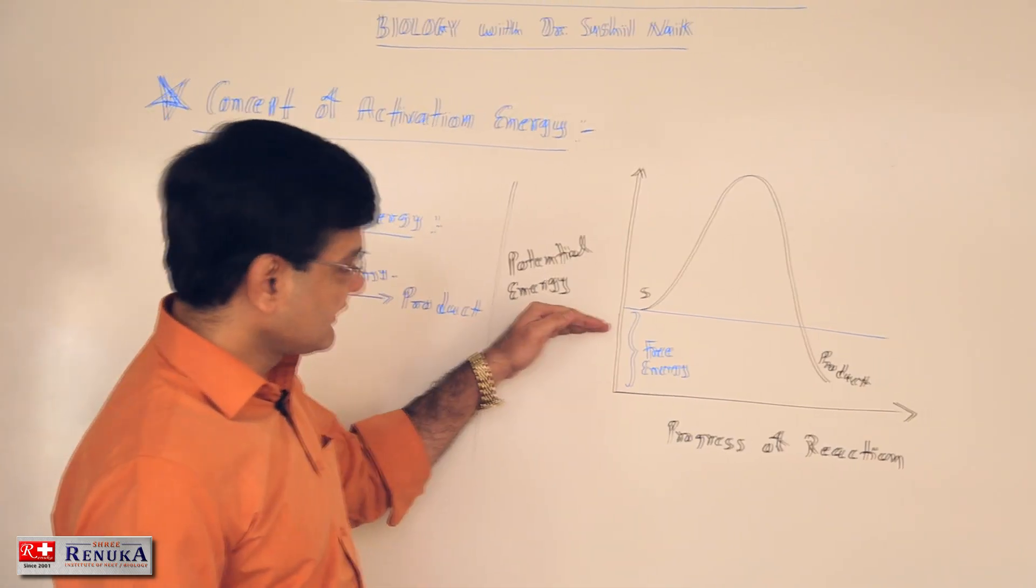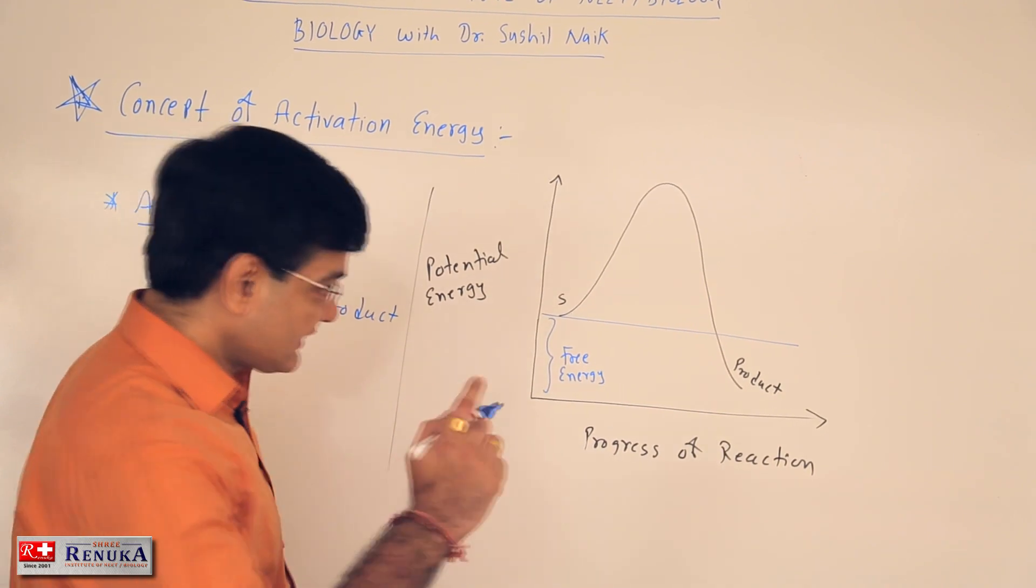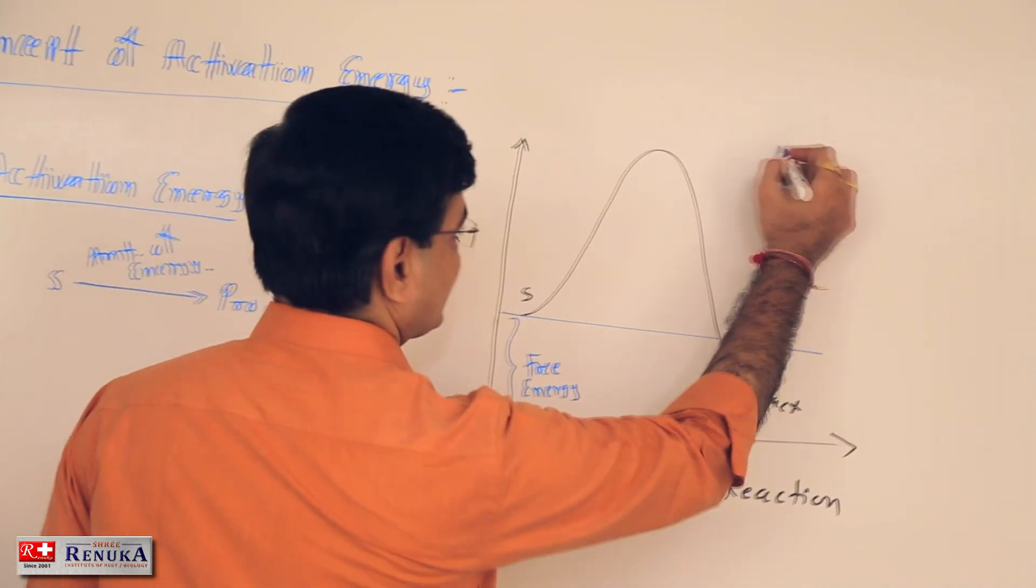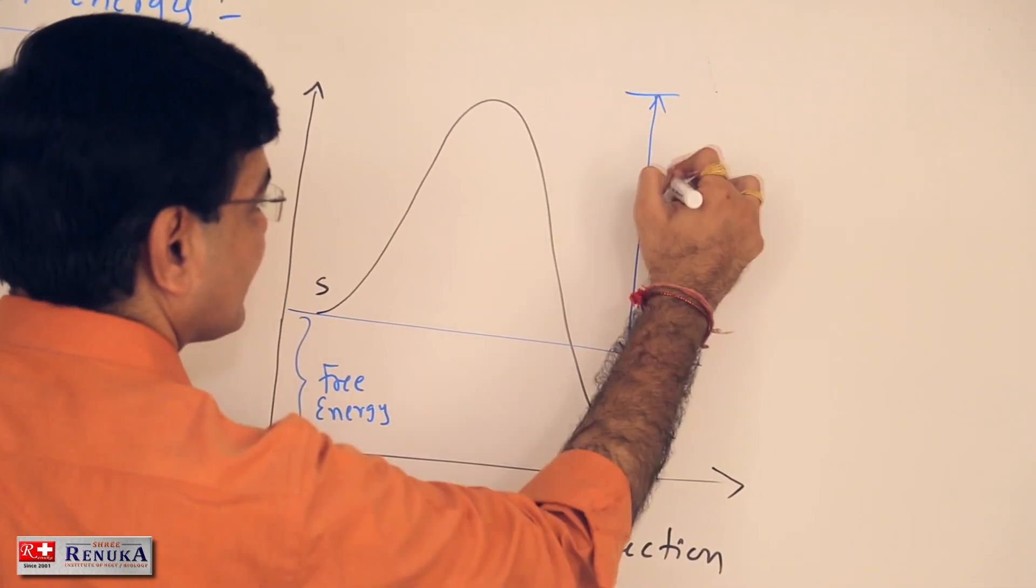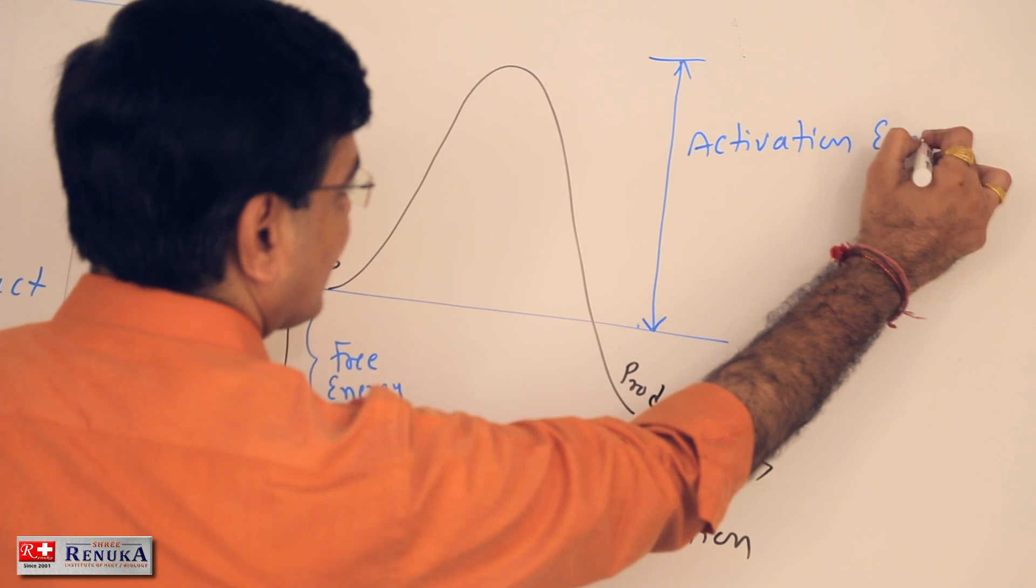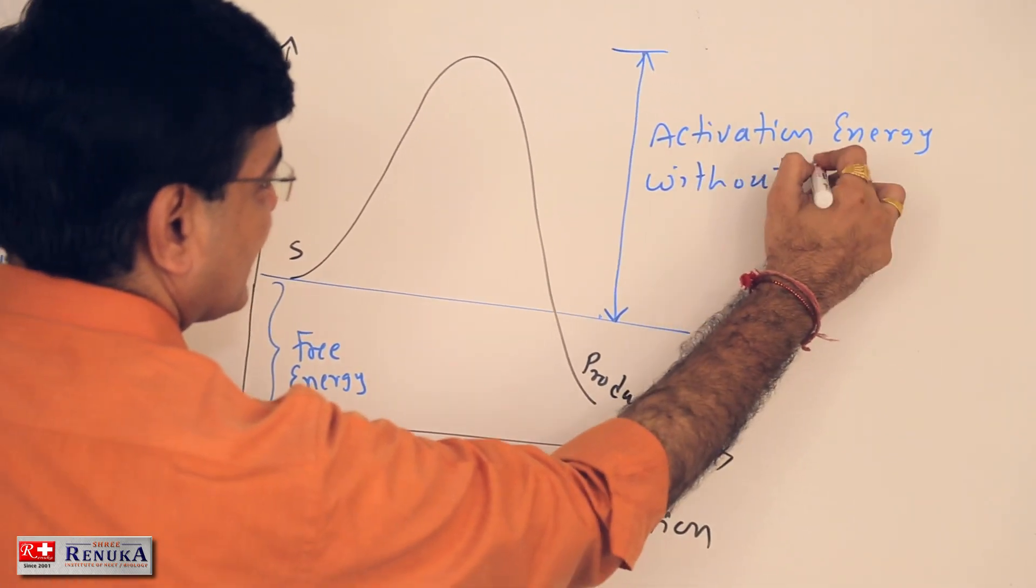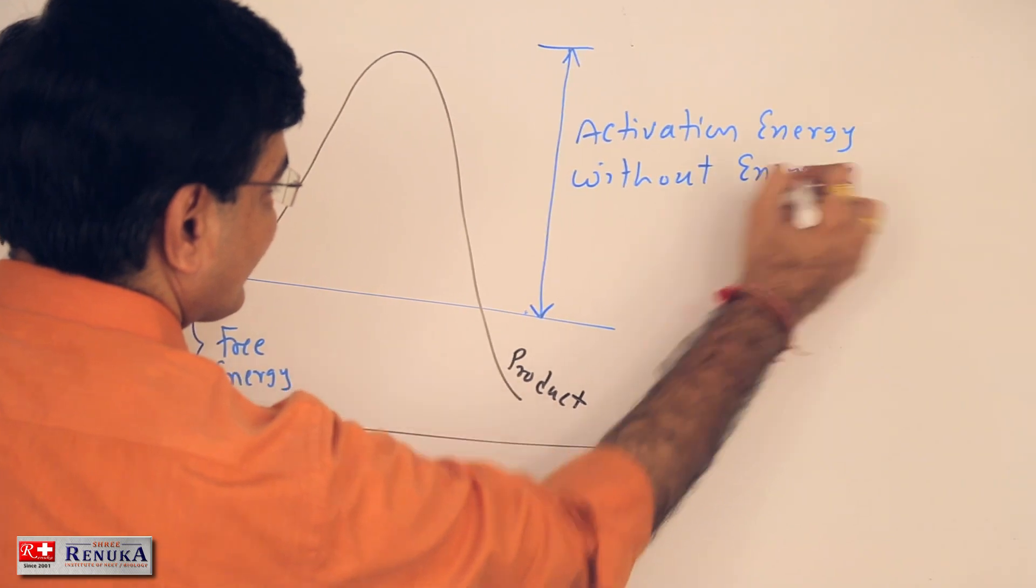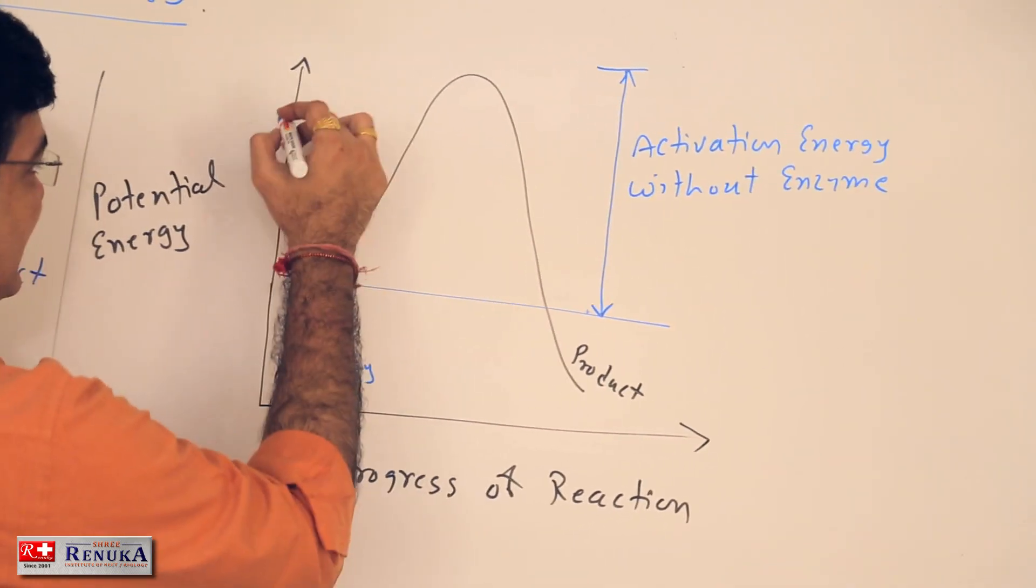This energy required to convert substrate into the product more than the free energy is itself the activation energy. This is activation energy without enzyme and it is always a kind of exothermic process.